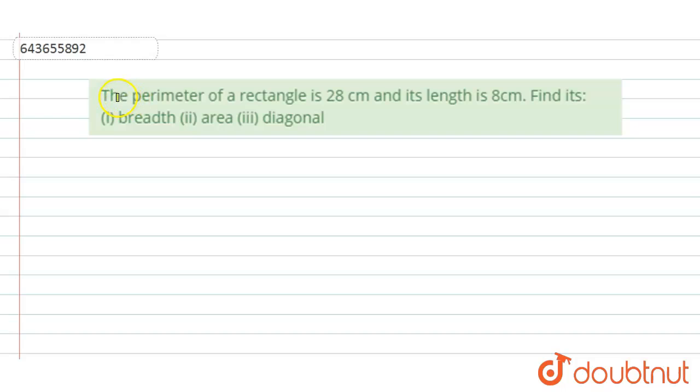Hi, welcome to this video. The question is: the perimeter of a rectangle is 28 centimeters and its length is 8 centimeters. Find its (i) breadth, (ii) area, and (iii) diagonal.